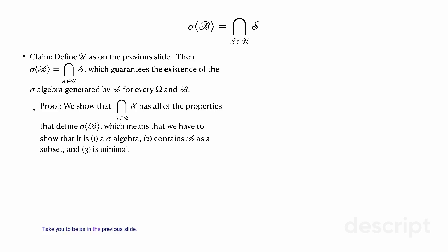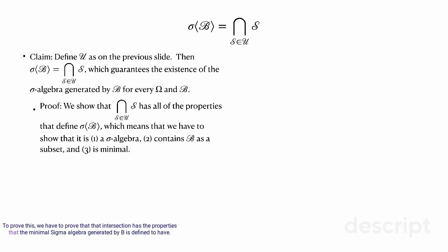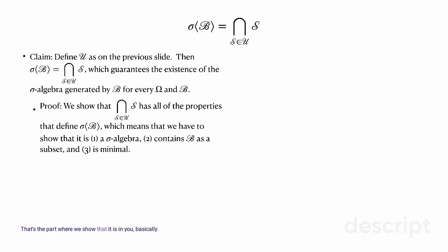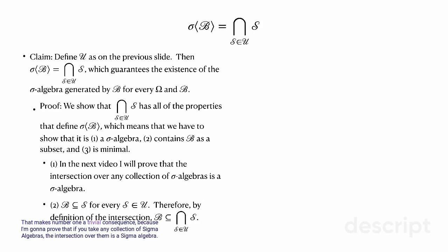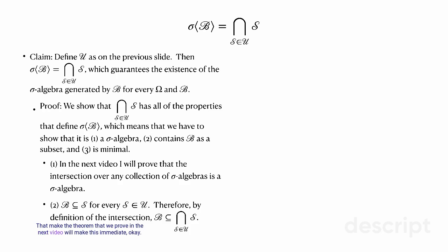The claim is: take U as in the previous setup, and sigma of B — the sigma algebra generated by B — equals the intersection over U. To prove this, we must show that intersection has the properties of the minimal sigma algebra generated by B. That means showing it's a sigma algebra, that it contains B as a subset, and that it satisfies minimality. I'll skip proving it's a sigma algebra because in the next video I'll prove that any intersection of sigma algebras is a sigma algebra, which makes this an immediate consequence. Since U is a collection of sigma algebras, that result applies directly.